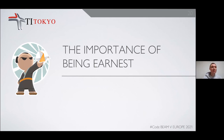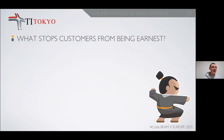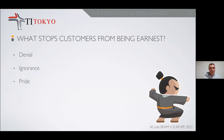Now we discuss the importance of being earnest. What stops customers from being earnest when discussing issues with their tech support — the people they pay to help them? First, we have people with denial issues who refuse to admit the problem. We have people with ignorance who have no idea what the problem is. We have people who are too proud to admit what the problem is. Some places are too protective of their data. And some places just neglect the issue until it becomes a serious problem.